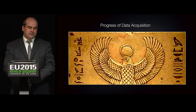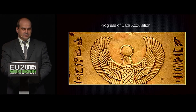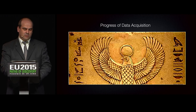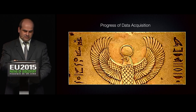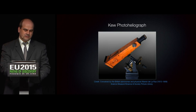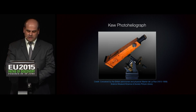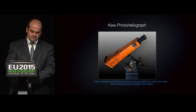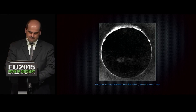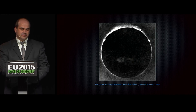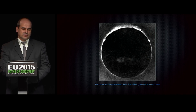Let us have a look at the progress of data acquisition, specifically the capturing of what we see. This picture of the Egyptian sun was most likely created with a hammer and a chisel. In the mid-1800s, an astronomer and physicist Warren Delarue designed and built the first cube photoheliograph used to photograph the sun's corona. For his time, this was a major scientific breakthrough, since up until this time no known photographs of the sun's corona ever existed.